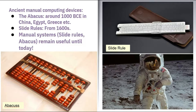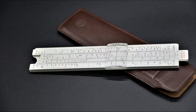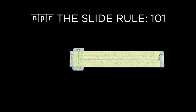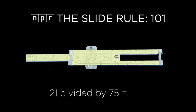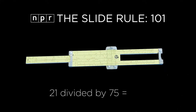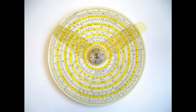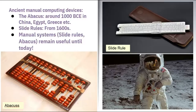John Napier's discovery of logarithms in the early 1600s gave way to the development of the slide rule by William Oughtred, an English mathematician, around 1622. In its simplest form, the slide rule adds and subtracts lengths in order to calculate a total distance. But slide rules can also handle multiplication and division, find square roots, and do other sophisticated calculations.